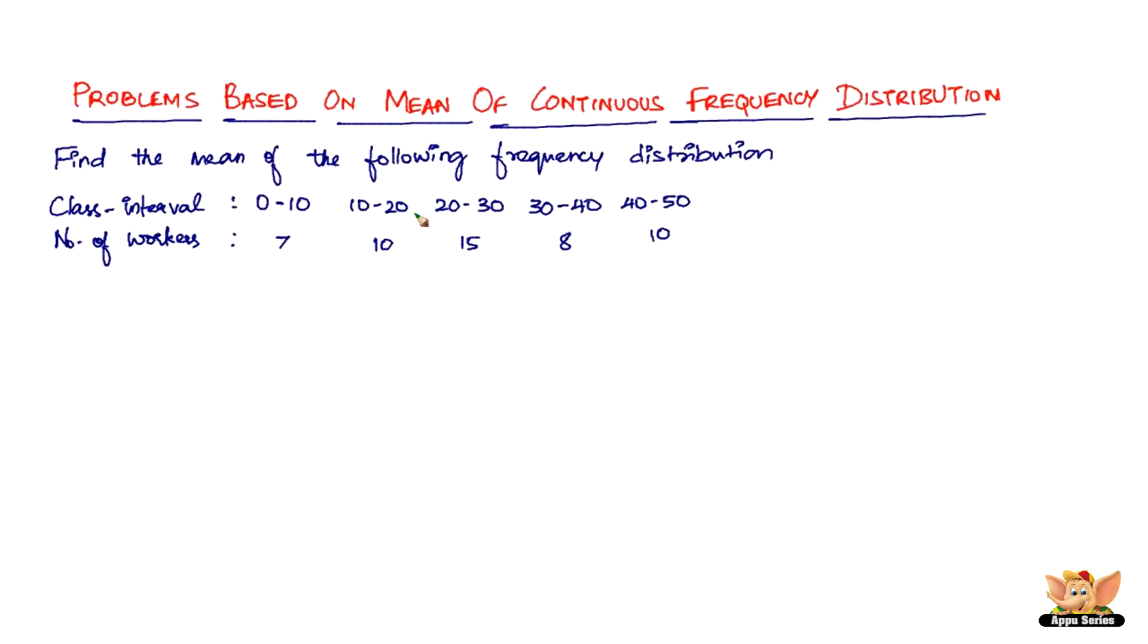This is the continuous frequency distribution type, it's like 0 to 10, 10 to 20, 20 to 30 and so on. Nothing really changes as far as this continuous frequency distribution is concerned. We are going to solve this problem by step deviation in this video.